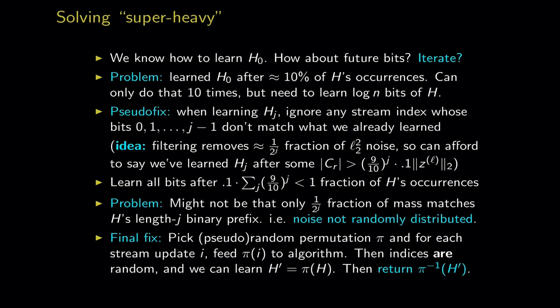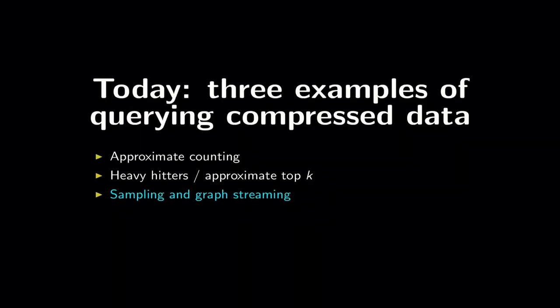When permuting, I'm not permuting the stream — I'm permuting the universe. Whenever I see item i, I apply π and feed π(i) to my algorithm. At the end I get back π(h) and compute π⁻¹ to recover h. That's all I want to say about heavy hitters. Now for the last topic.